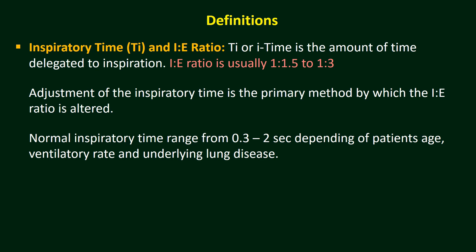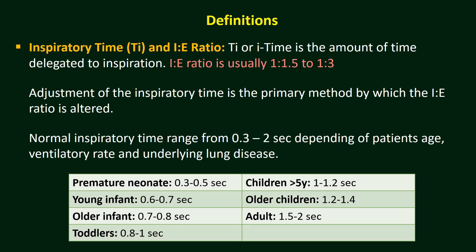Adjustment of Inspiratory Time is the primary method by which the Inspiratory-Expiratory Ratio is set. When we set respiratory rate and Inspiratory Time, the I:E Ratio is set automatically. On the other hand, when we set rate and I:E Ratio, Inspiratory Time automatically gets set. Normal Inspiratory Time ranges from 0.3 to 2 seconds depending on patient's age, ventilatory rate, and underlying lung conditions. There is no hard and fast rule, but this can be an initial setup.